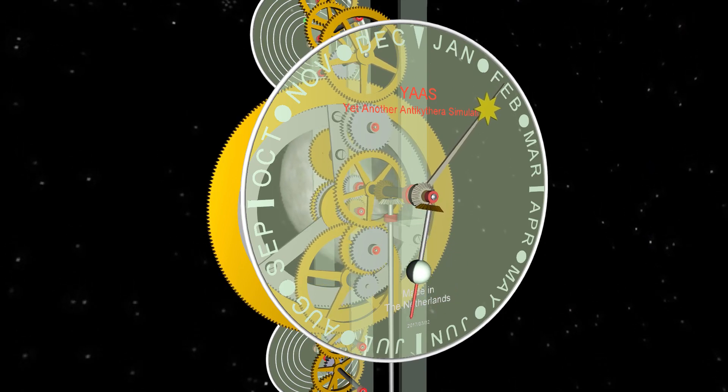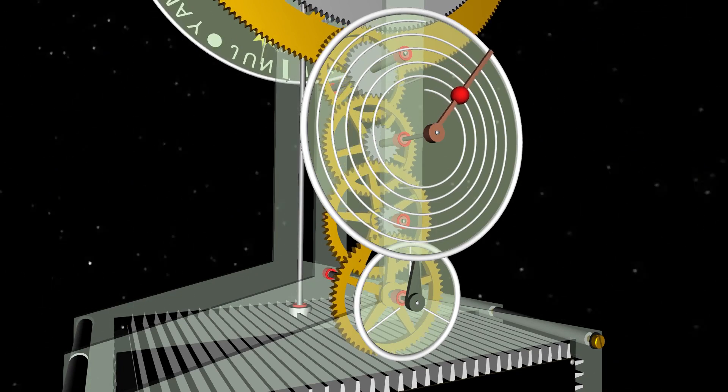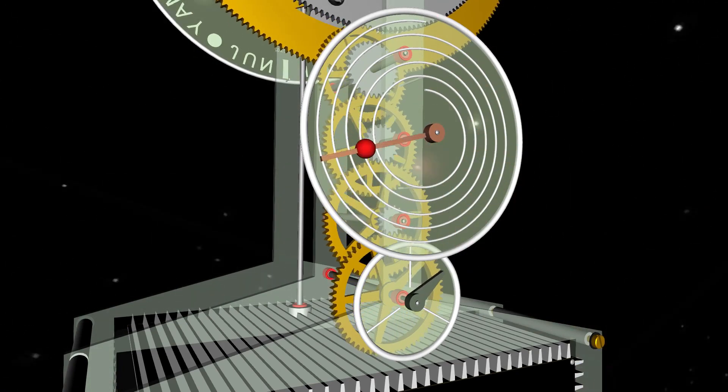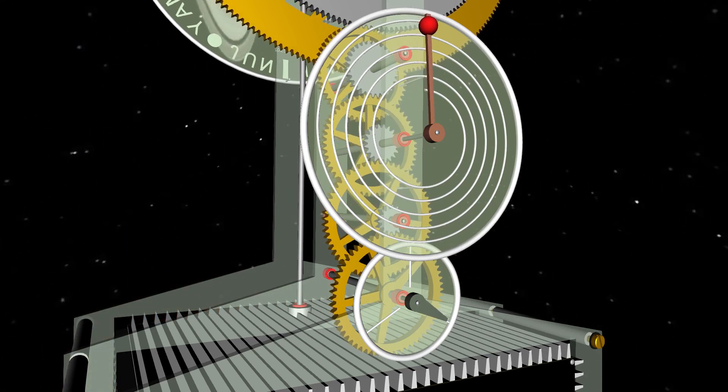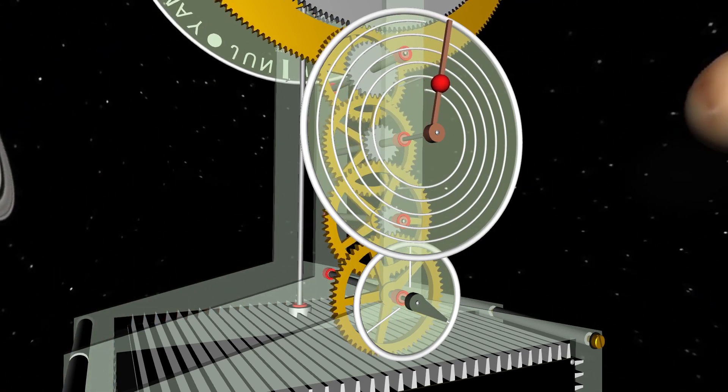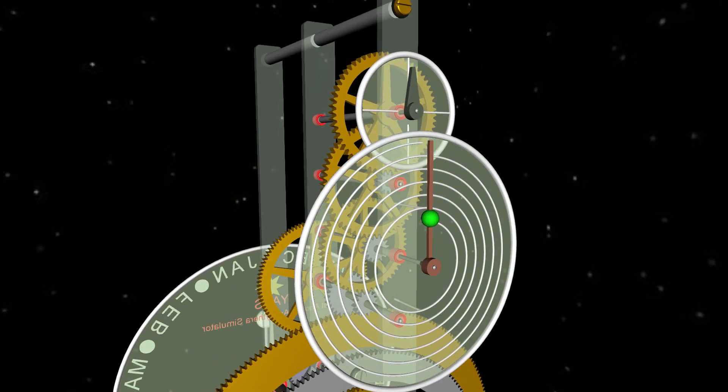It also had a half-silvered ball for displaying lunar phases. The mechanism also contained two large dials on the back side that had many moving pointers to provide accurate information related to the movement of astronomical bodies and time calculations.